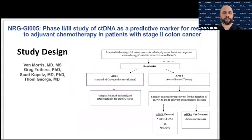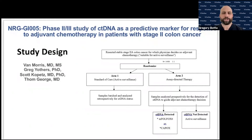This has informed new studies on the horizon, including the NRG phase two/phase three study using ctDNA as a predictive marker. Building on the 2016 Science Translational Medicine article, it focuses on stage two colon cancer patients traditionally not recommended for adjuvant therapy. If ctDNA is negative, patients continue with active surveillance; if ctDNA is positive, they are treated. The goal is to follow these patients forward and evaluate whether additional treatment guided by ctDNA improves outcomes.